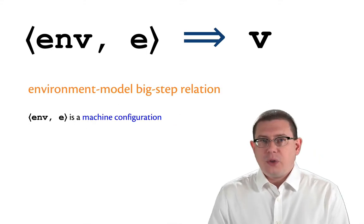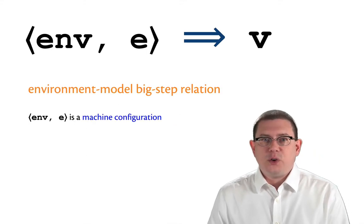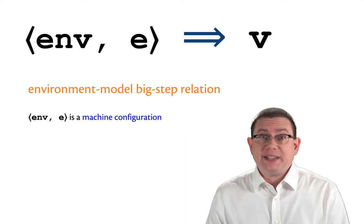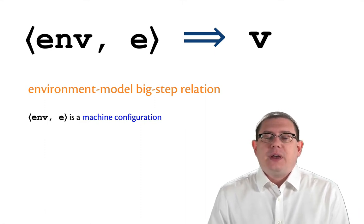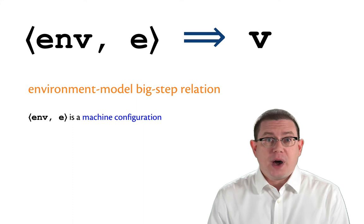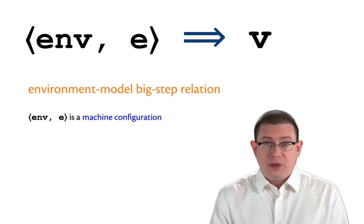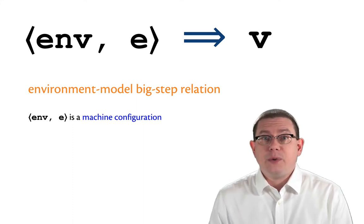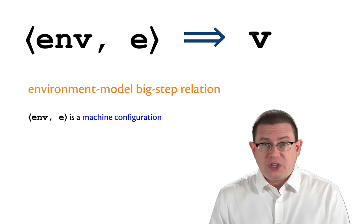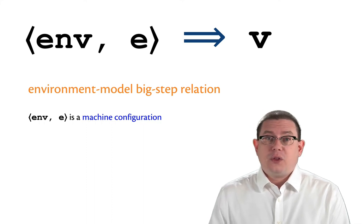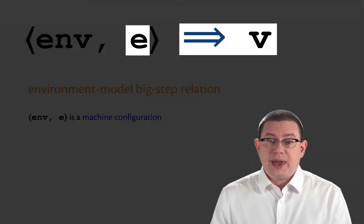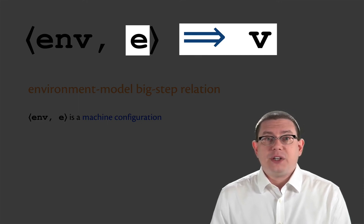To model this kind of evaluation, we're going to introduce a new big step relation. As opposed to the substitution model big step relation we had before, this is the environment model big step relation. It looks pretty similar. We've still got the big arrow. We've still got an expression e and that's being evaluated to a value v.